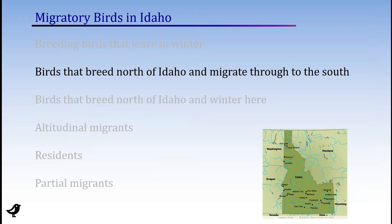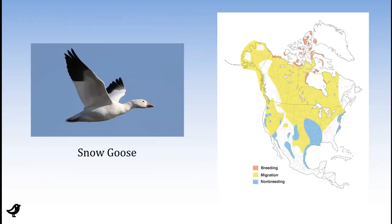Birds that breed north of Idaho and migrate through to the south — we don't have so many of these. Probably the best example is the snow goose. They've been out at the Fort Boise Wildlife Management Area in numbers and are probably mostly leaving now. The orange breeding ranges are way up in the high Arctic — a relatively small distribution in the breeding range — and then migrating through a huge part of North America to winter along the west coast, the Central Valley, Southern Mississippi Valley, Southern Great Plains, and even some on the Atlantic coast. These birds mostly blow through Idaho in spring and fall.